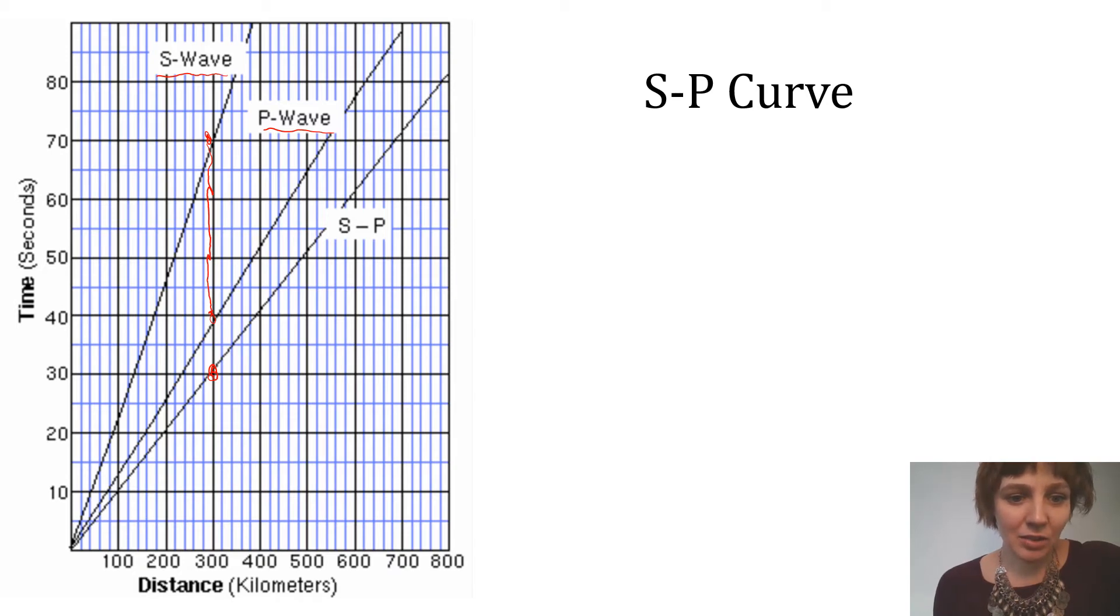And 30 seconds would be where that hits on the S minus P curve. And so in this week's activity, instead of using a piece of paper to find this number between the two lines, you're going to just directly look for it on the S minus P curve.